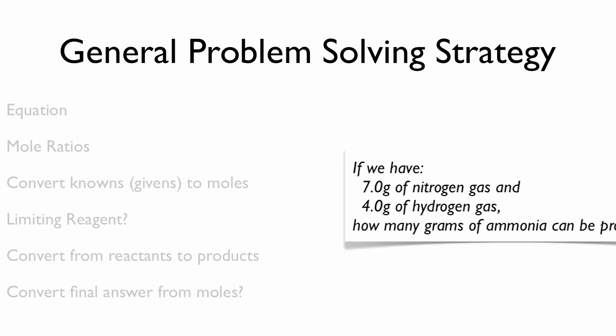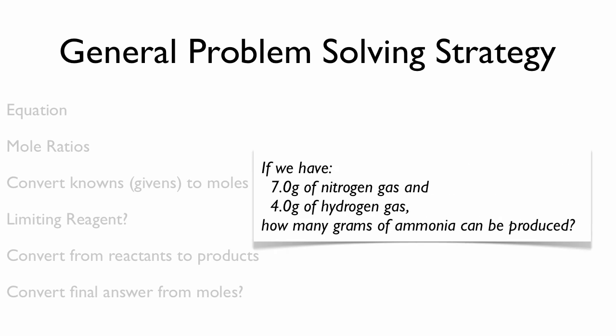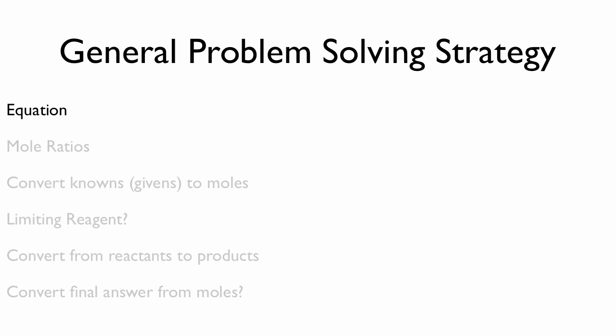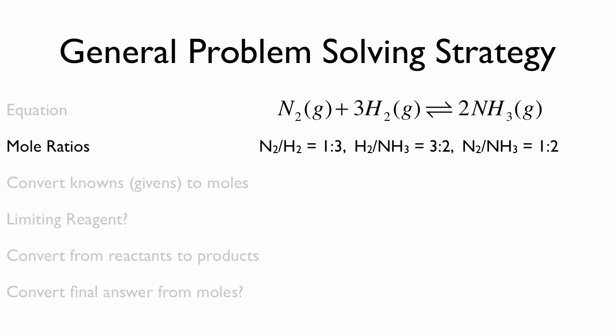Let's try it out on a sample problem. If we have 7 grams of nitrogen and 4 grams of hydrogen gas, how many grams of ammonia can be produced? Well, first thing we need is the equation for the reaction, and here it is. By the way, this is what's famously known as the Haber process for manufacturing ammonia. Next, we need to look at the mole ratios, which are right there in the equation for us. For every mole of nitrogen we use, we need 3 moles of hydrogen to react with it. For every mole of nitrogen or every 3 moles of hydrogen, we'll get 2 moles of ammonia coming out.